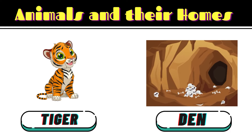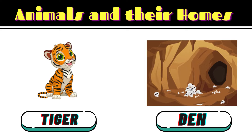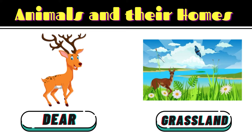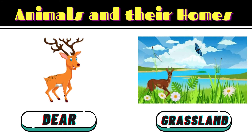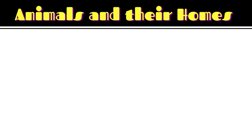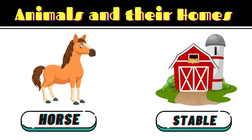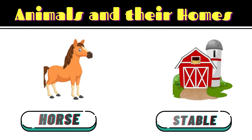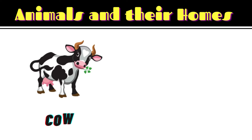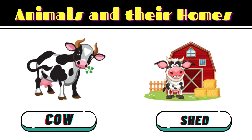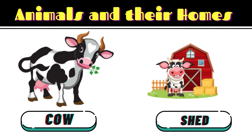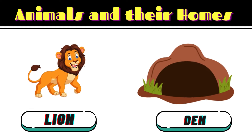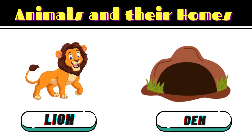Tiger. Tiger lives in a den. Deer. A deer lives in a grassland. Horse. A horse lives in a stable. Cow. A cow lives in a shed.